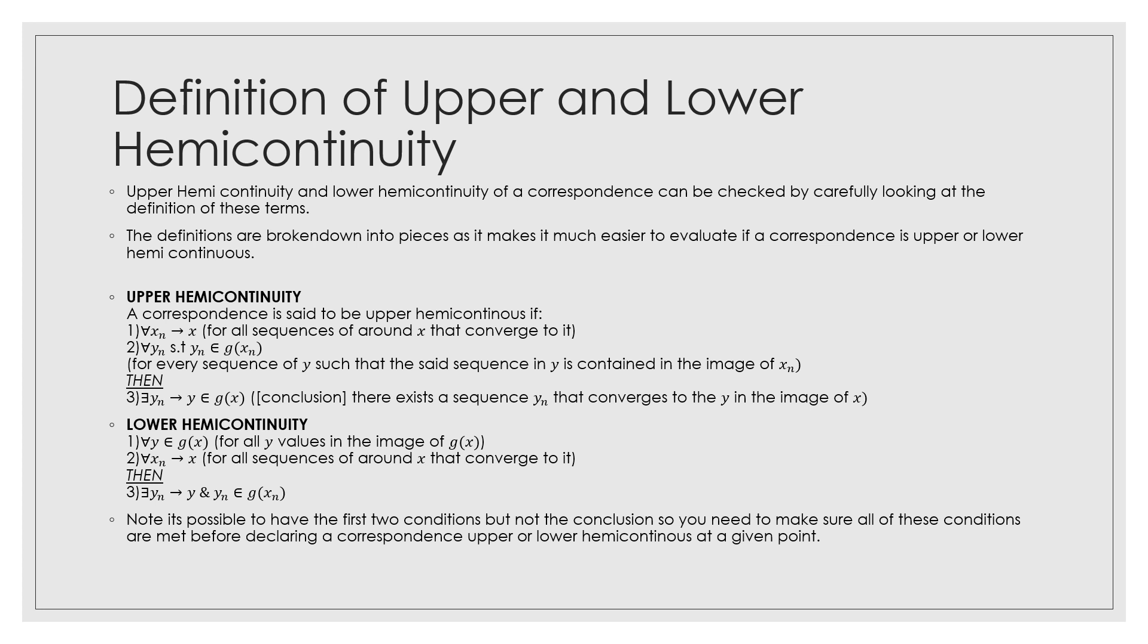For upper hemicontinuity, a correspondence is said to be upper hemicontinuous if: for all sequences xₙ around x that converge to it, and for all sequences yₙ that is contained in the image of xₙ, meaning that the sequences around xₙ is going to be contained in the image of it, then there exists a sequence yₙ that converges to y in the image of x. So this is a little bit of a hard thing, but just keep this in your mind.